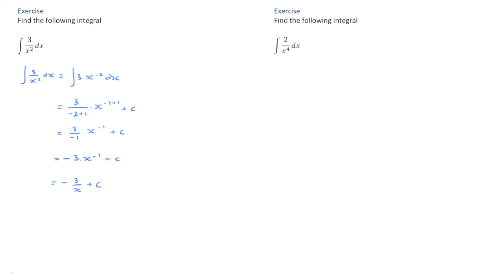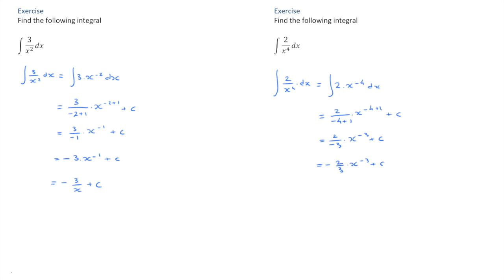Let's look at the next example. We have to find the integral of 2 over x to the power of 4. Again, the first thing we'll do is rewrite this, making sure that x is written with a negative exponent. So that would be the integral of 2 times x to the power of negative 4. We now use the power rule, which leads to 2 over negative 4 plus 1, times x to the power of negative 4 plus 1, plus c. Negative 4 plus 1 is negative 3, so that leads to 2 over negative 3 times x to the power of negative 3 plus c. We can write x to the power of negative 3 as 1 over x cubed, which leads to negative 2 thirds times 1 over x cubed plus c.